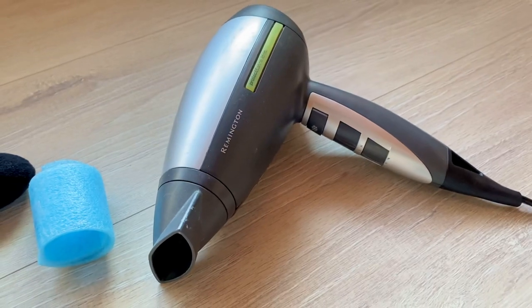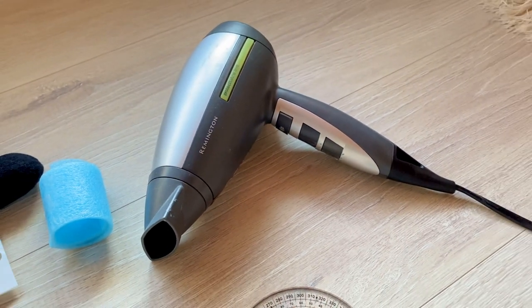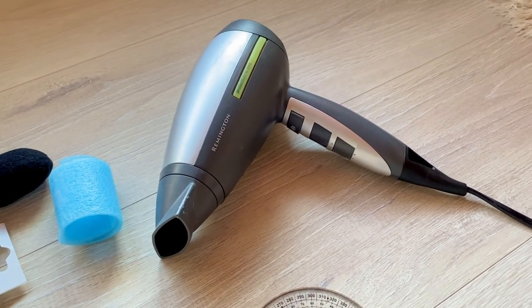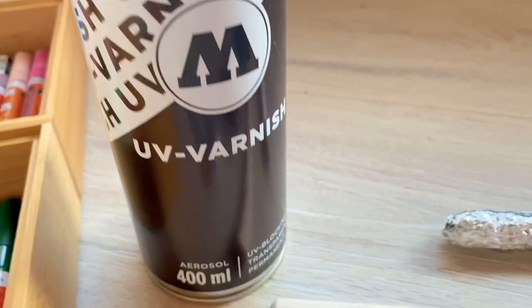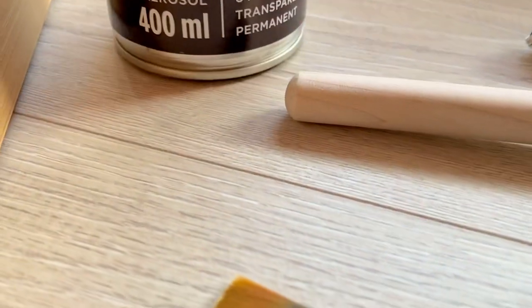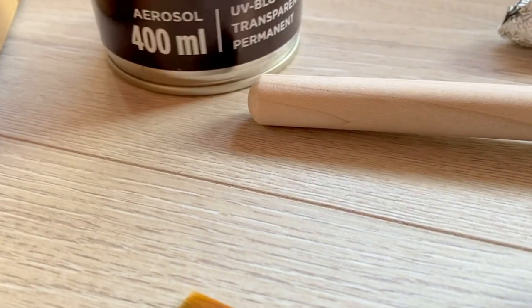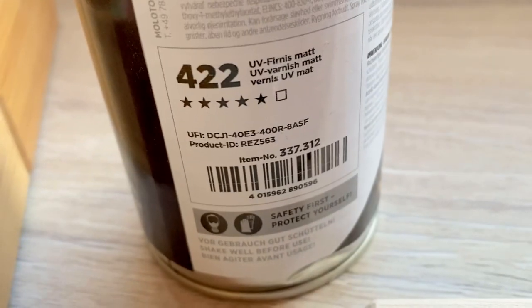This is for drying layers so you can use a hair dryer to just dry different paint layers. This is the varnish that I use, Molotow UV varnish, and this is the matte version. This is what you need to seal.